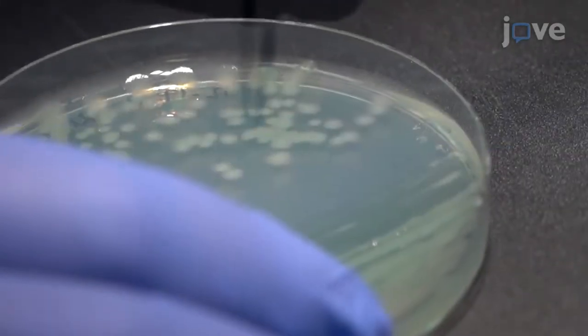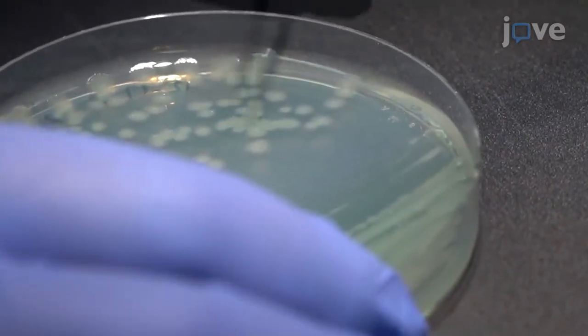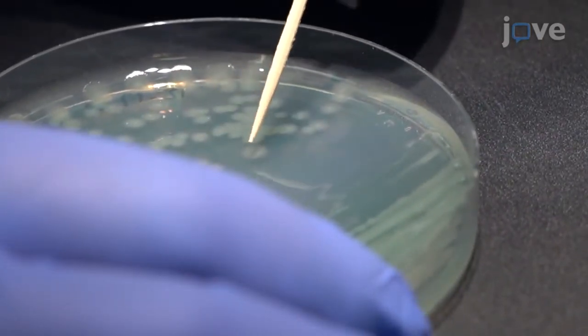To begin the uronic acid carbazole assay, identify a single colony from a pure culture of the desired strain to be tested and pick the colony using a sterile tube.